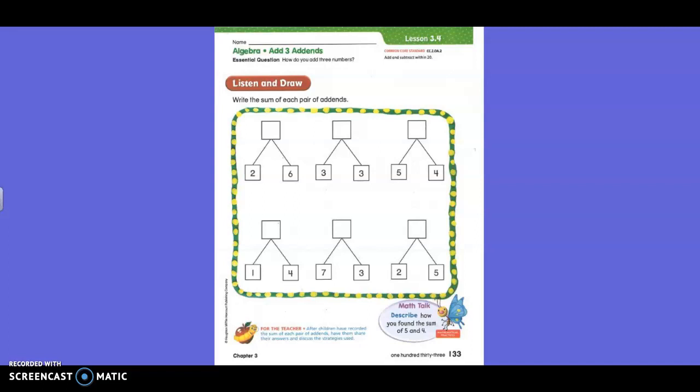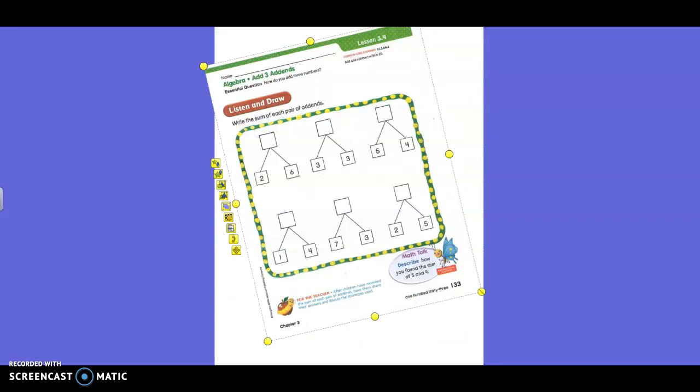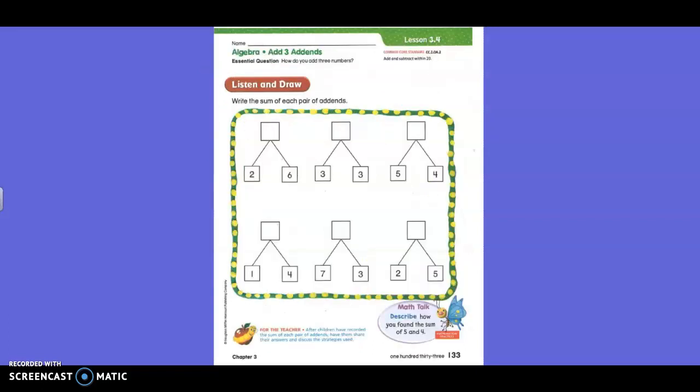Boys and girls, today we are going to find sums for basic facts using properties and strategies. Okay, let's read the directions for listen and draw. Write the sum of each pair of apples. Okay, so these two things are addends. You're going to write the answer in the box from those two addends. Does that make sense?